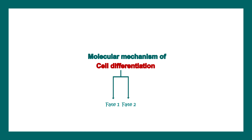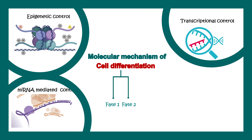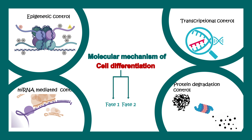Overall, there could be epigenetic influences, mRNA-mediated controls, differential mRNA stability, differential gene expression, transcriptional control, and protein degradation control. For example, a particular protein present in the initial phase of differentiation may eventually degrade, or a protein initially degraded may become stabilized beyond a certain point in development. That stabilization leads to the choice of one particular fate over the other — this is how cell differentiation takes place.